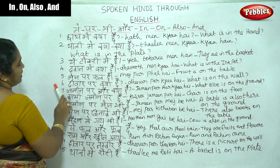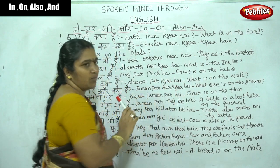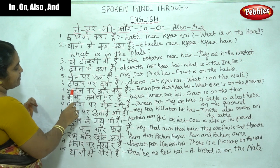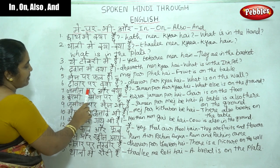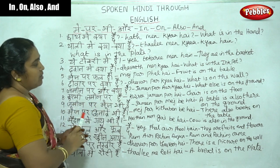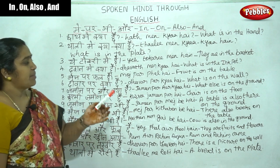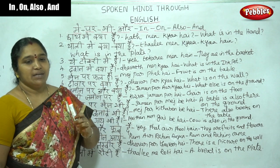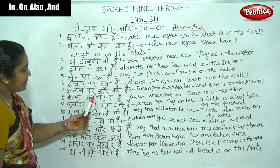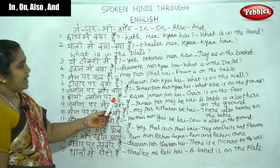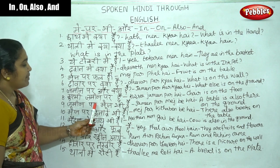Thali may kya hai — what is on the wall? Jamin par kya hai — what is on the ground? Jamin par aur kya hai — what else is on the ground? Jamin par kursi hai, jamin par talab hai, jamin par pen hai. Kursi jamin par hai — chair is on the floor.